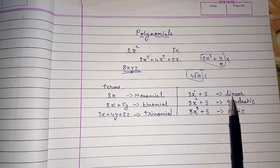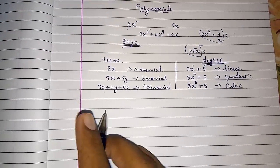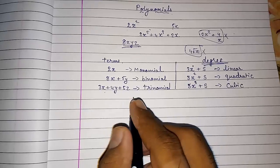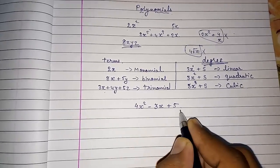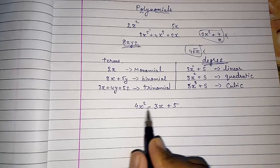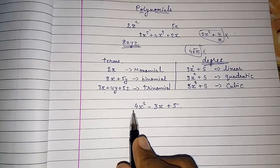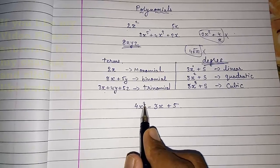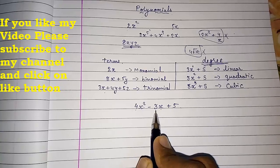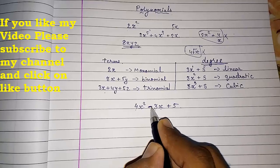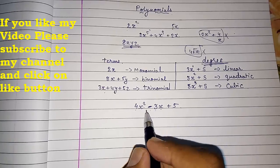Now we are going to study the coefficient. Consider the polynomial 4x squared minus 3x plus 5 — this is a polynomial with one variable, x. The number with x squared is called its coefficient, so the coefficient of x squared is 4. For the coefficient of x, you must take the sign as well — so the coefficient of x is minus 3, not 3.